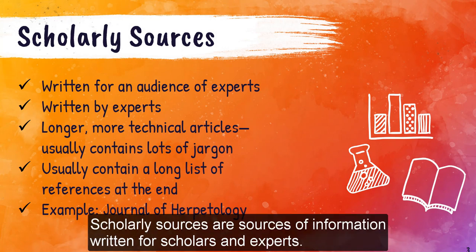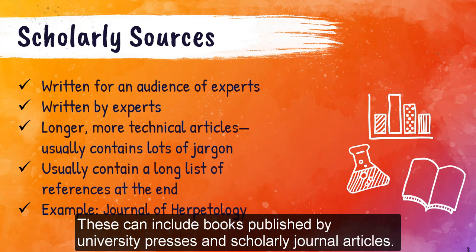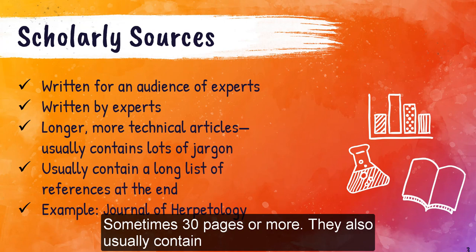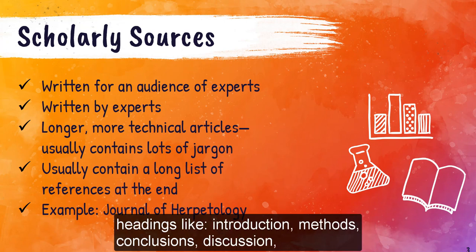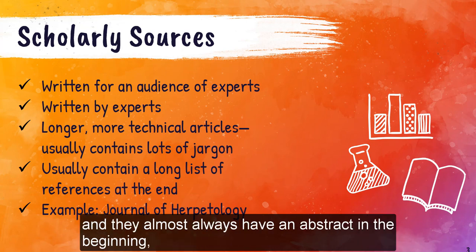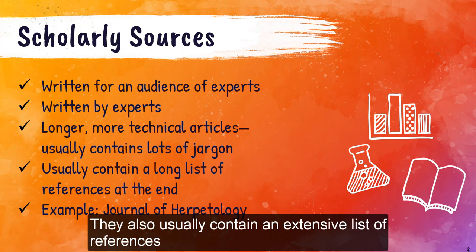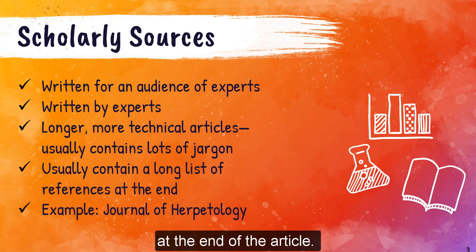Scholarly sources are sources of information written for scholars and experts. These can include books published by university presses and scholarly journal articles. Scholarly journal articles are usually much longer than popular articles, sometimes 30 pages or more. They usually contain headings like Introduction, Methods, Conclusions, and Discussion, and they almost always have an abstract at the beginning that tells you in a paragraph what the article is about. They also usually contain an extensive list of references at the end.